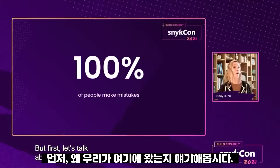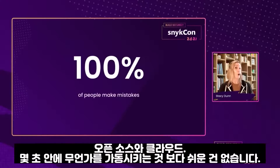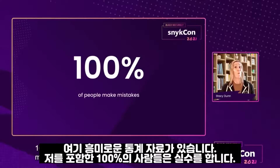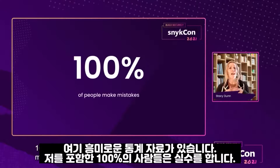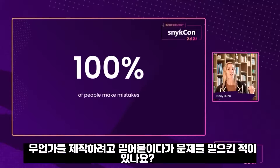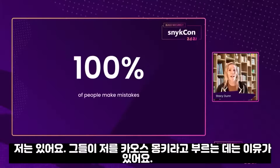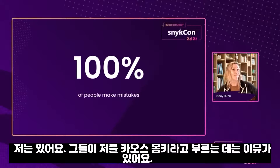But first, let's talk about why we're all here. Open source, cloud — it couldn't be easier to spin something up in a matter of seconds. Here's an interesting statistic: 100% of people make mistakes, myself included. Have you ever pushed something into production and caused it to break? I know I have. They don't call me chaos monkey for nothing.